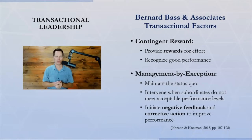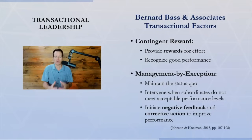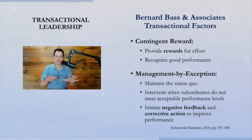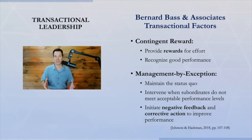Bernard Bass and his research associates talked about different factors in transactional leadership. The first is contingent reward — where the leader provides rewards for good effort and recognizes good performance. You only get the reward if you perform well. There's also management by exception — where you step in when something's not going well. The leader intervenes when subordinates don't meet acceptable performance levels, then initiates negative feedback, corrective action, essentially punishment.